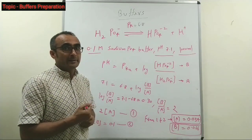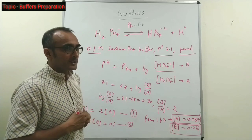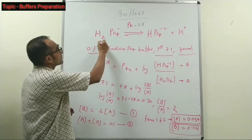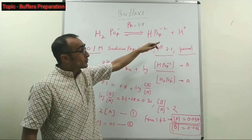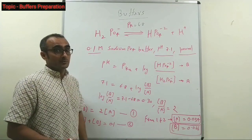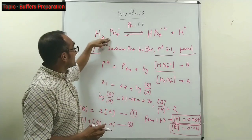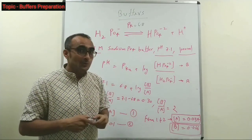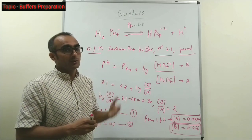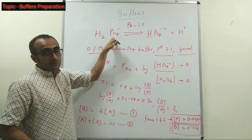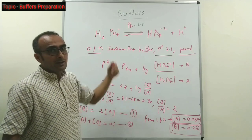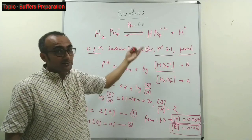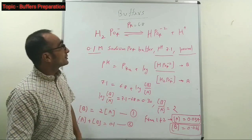Now, for buffer preparation — let's discuss the preparation of phosphate buffer. Phosphate buffer is basically a mixture of phosphoric acid and its conjugate salt. Looking at phosphoric acid: H₂PO₄⁻ dissociates into HPO₄²⁻ and H⁺ ion — this is the equilibrium equation for phosphoric acid. To prepare phosphate buffer, you need to take H₂PO₄⁻ and HPO₄²⁻ in a fixed ratio. H₂PO₄⁻ could be a salt of sodium like NaH₂PO₄ or potassium KH₂PO₄; similarly, HPO₄²⁻ could be Na₂HPO₄ or K₂HPO₄.